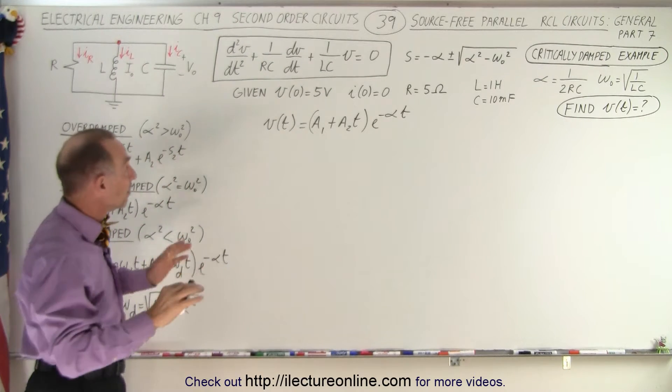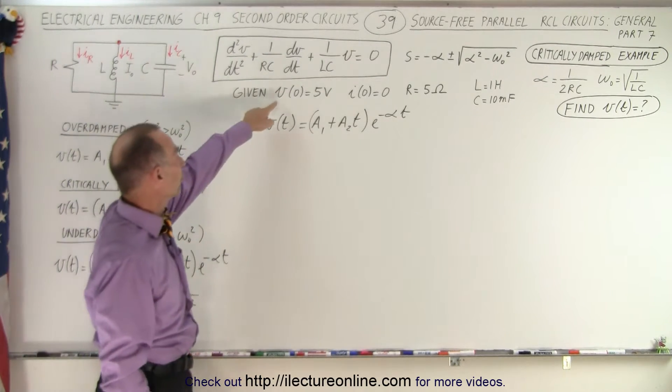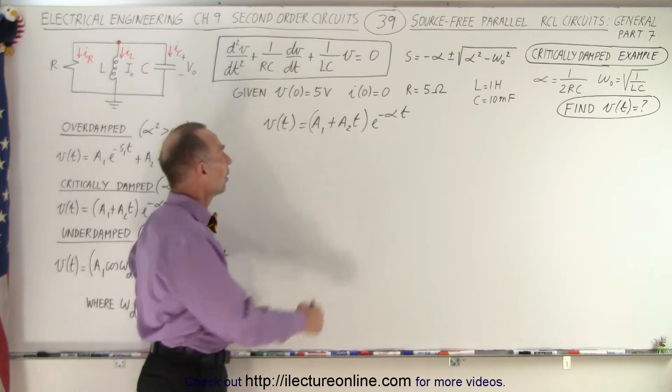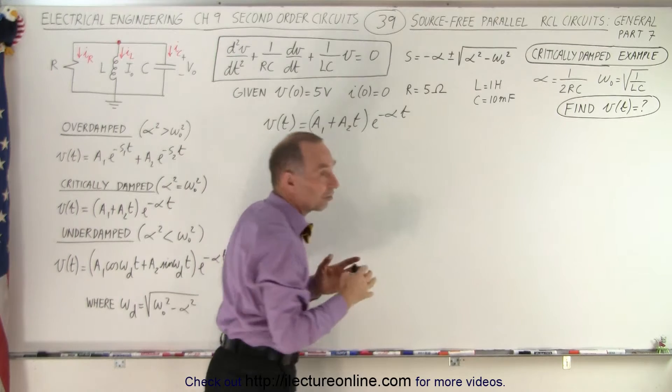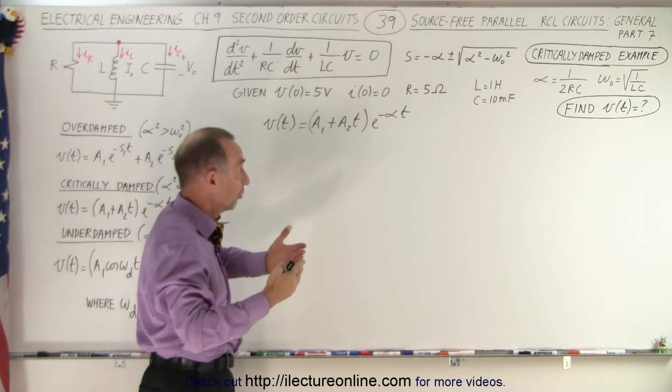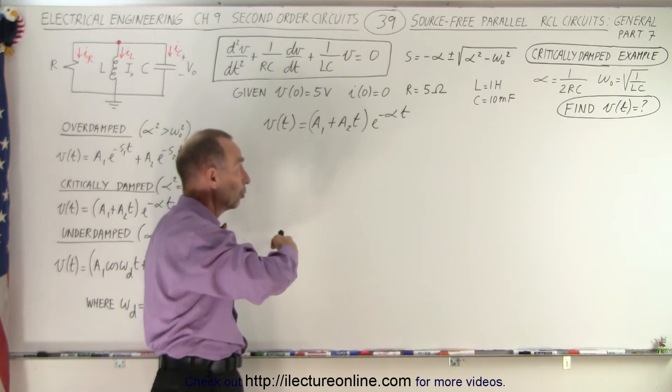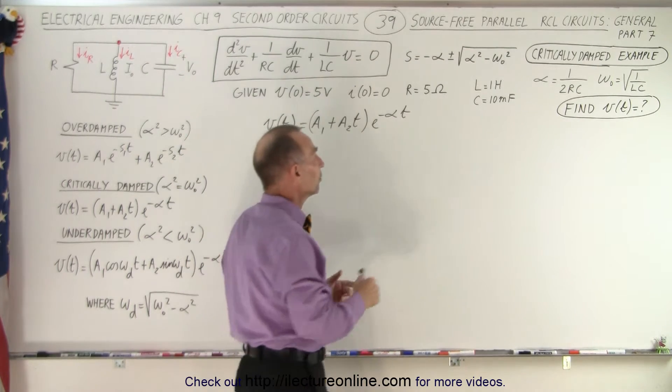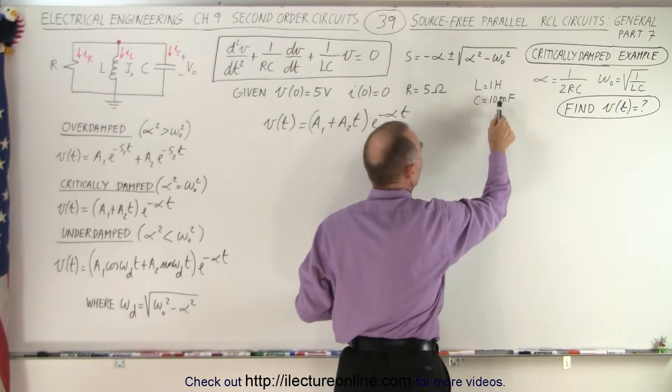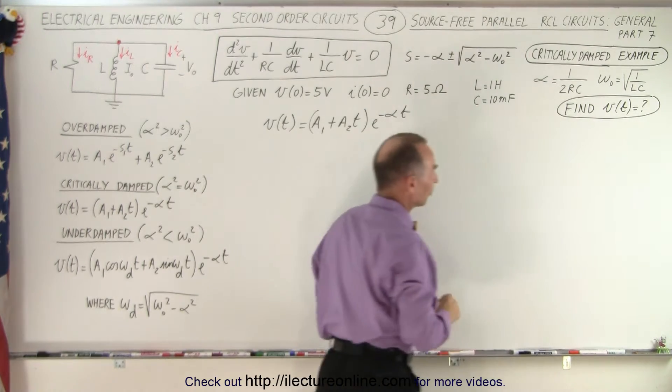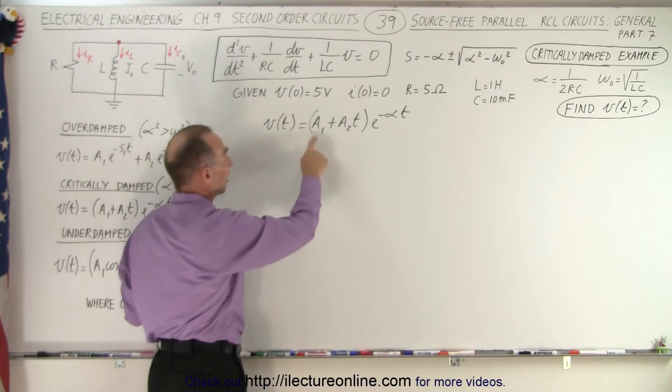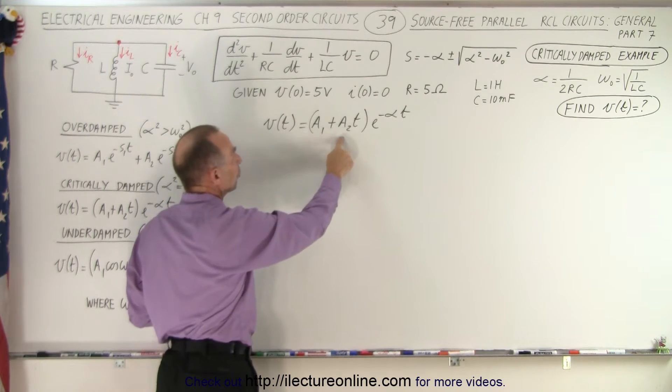We're given the same conditions here. The initial condition of the voltage at time equals zero is 5 volts. The initial current through the inductor is equal to zero. But now the resistance has gotten a little bit bigger because we need a bigger resistor to go from an overdamped case to a critically damped case. The inductor and the capacitor are still 1 henry and 10 millifarads and we're supposed to find the voltage as a function of time which means in this case we're going to need to find A1 and A2.